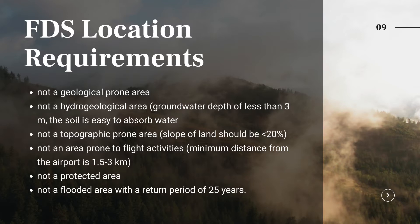It must not be a topographically problematic area — the slope of land should be less than 20%. It must not be an area near flight activities; the minimum distance from an airport is 1.5 to 3 km. It must not be a protected area or a flood-prone area with a return period of 25 years.